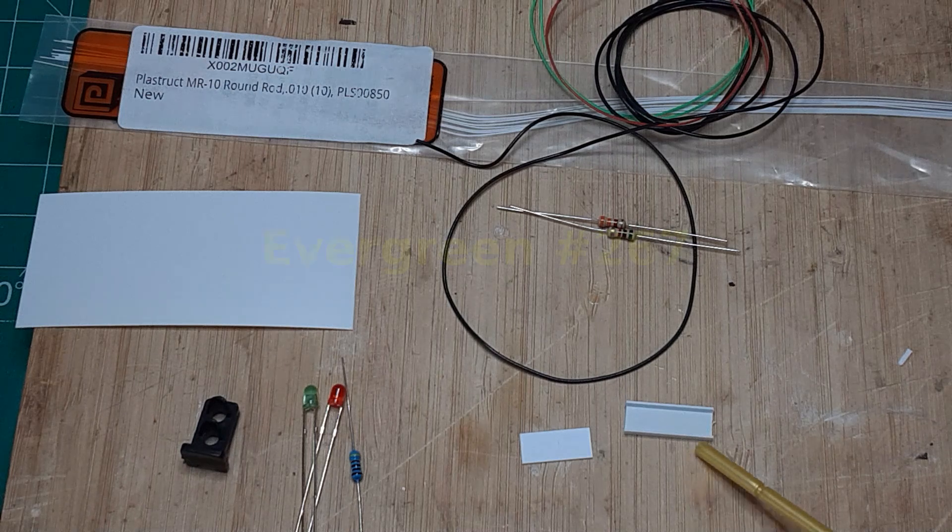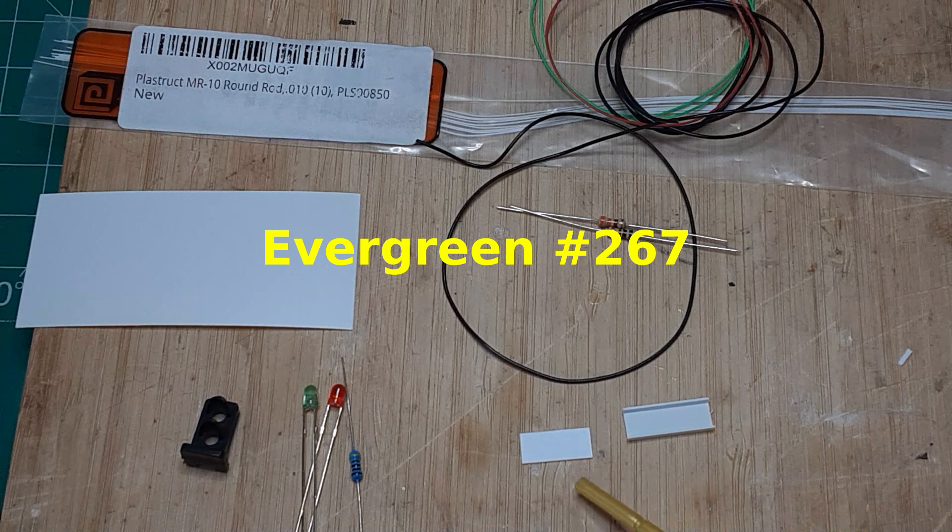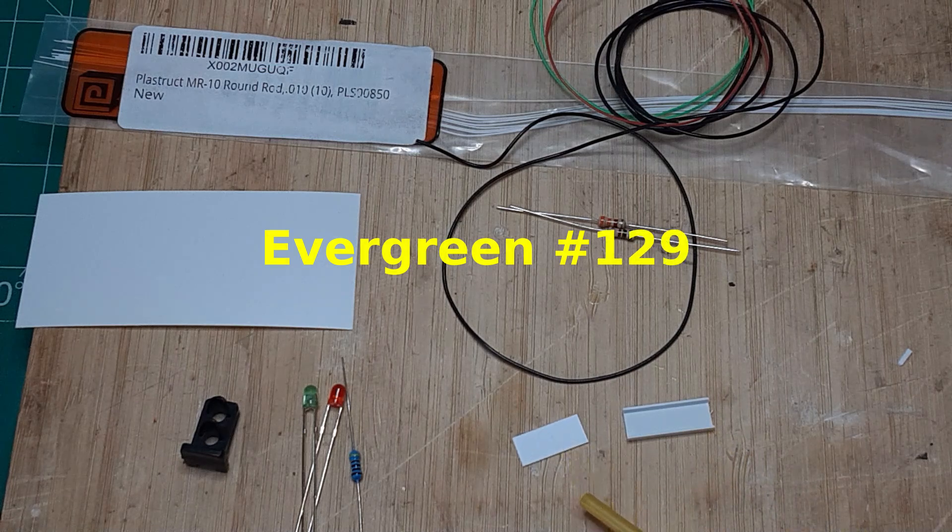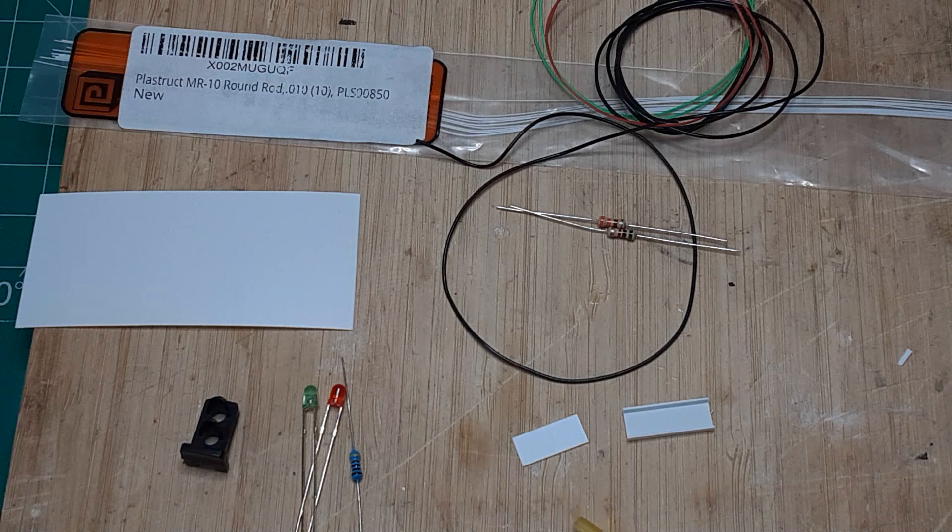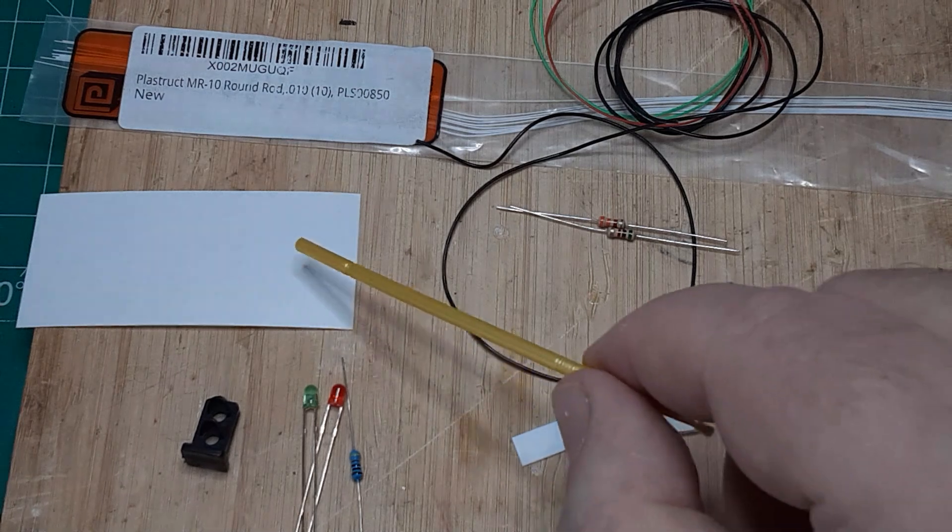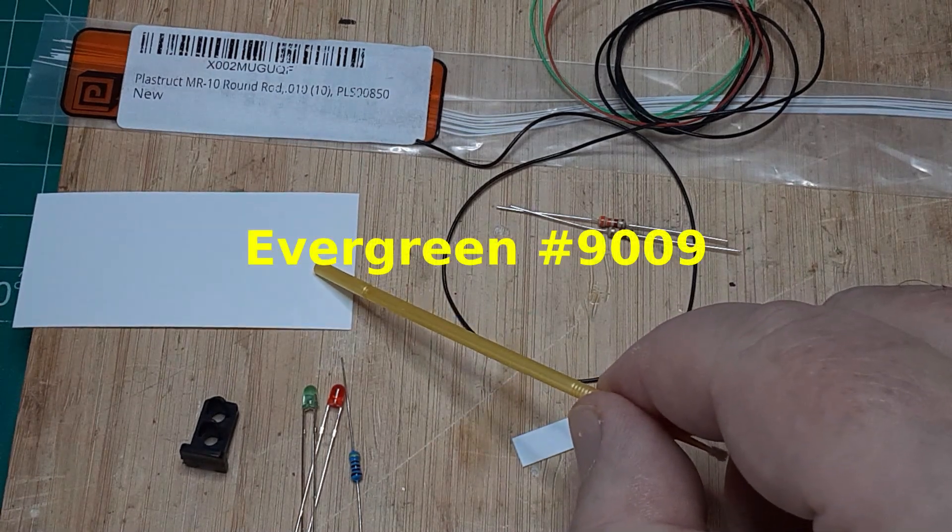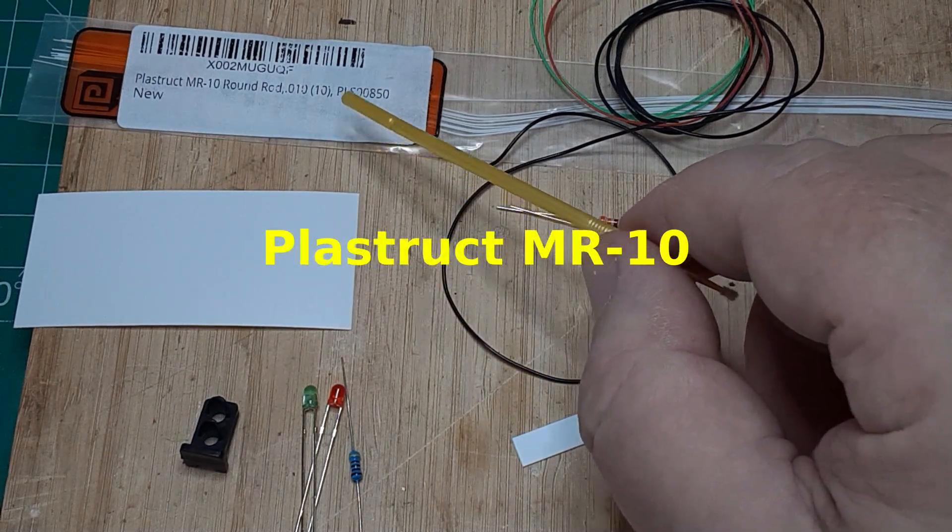In addition, you'll need some 1/4 inch styrene channel and some 20 thousandths by 1/4 inch styrene strip. If you want to add some detail to the back side of the signal, you'll need some 5 thousandths styrene sheet and some 10 thousandths styrene rod.